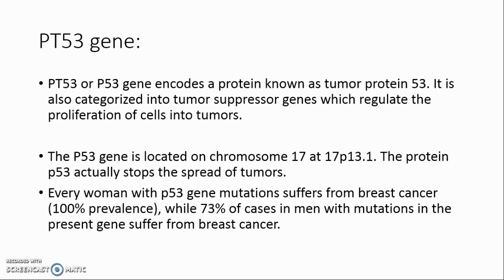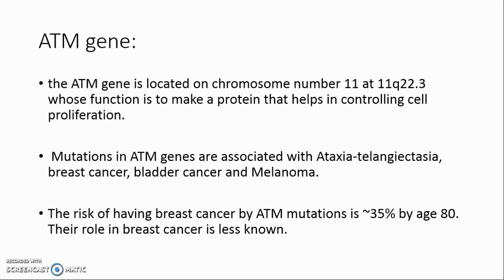p53 gene: the p53 gene encodes a protein known as tumor protein 53. It is also categorized as a tumor suppressor gene, which regulates the proliferation of cells into tumors. The p53 gene is located on chromosome 17 at 17p13.1. The protein p53 stops the spread of tumors. Every woman with p53 gene mutations suffers from breast cancer — 100% prevalence — while 73% of men with mutations in the p53 gene suffer from breast cancer.